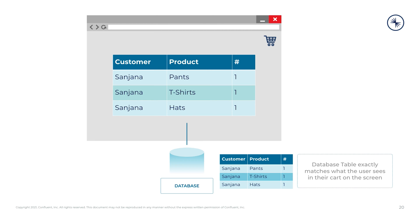Let's start with a simple example. Imagine we have an e-commerce application. A user, we'll call her Sanjana, has added a few items to her shopping cart: a t-shirt, some pants, and a hat. The shopping cart is stored in a database table, and that table looks just like the shopping cart does. The table has rows and columns stored in the database that exactly match the rows displayed on the screen when a user clicks their cart.